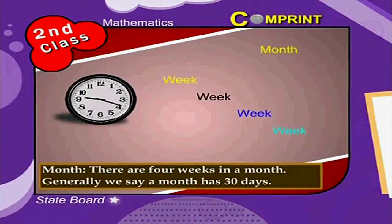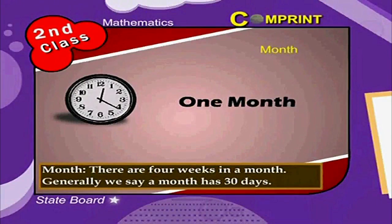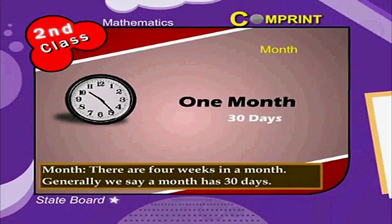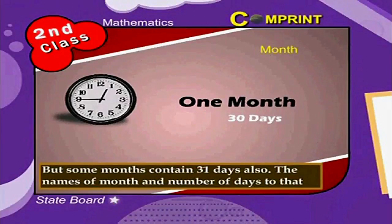Month: There are four weeks in a month. Generally, we say a month has 30 days, but some months contain 31 days also.